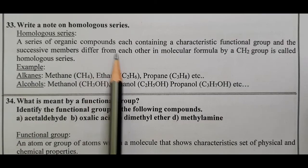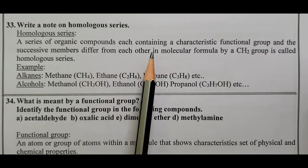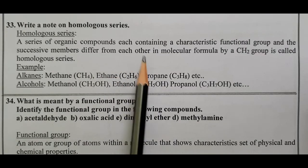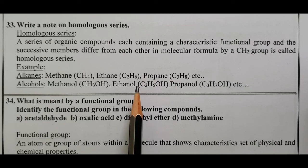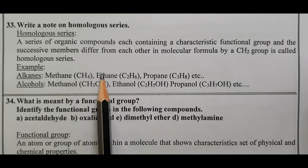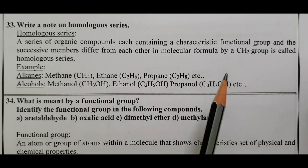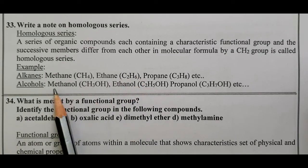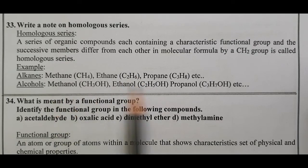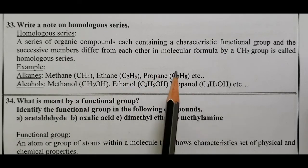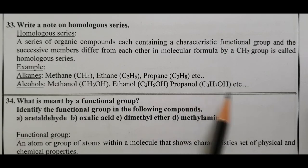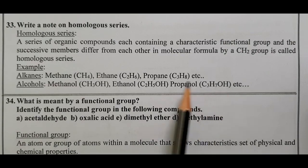Alkanes have the general molecular formula CnH2n+2. Members include methane, ethane, propane, butane, pentane, hexane, heptane, and octane. Alcohols are another homologous series; members include methyl alcohol (methanol), ethanol, propanol, butanol, and pentanol.